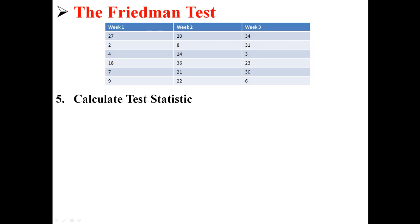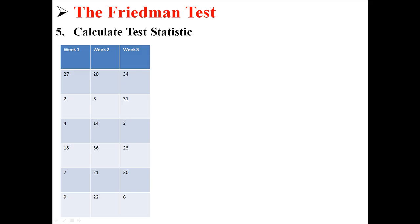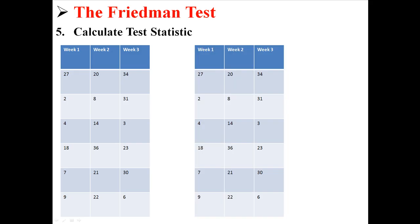Next, we will actually calculate that value, which is our test statistic. So here's our data, I just moved it over a little bit and now I'm going to duplicate it so I can show you something. These scores that I have indicated in red: 27, 20, and 34. Remember, those all come from the same person at week 1, week 2, and week 3. What you need to do is rank those scores within the row, like this.